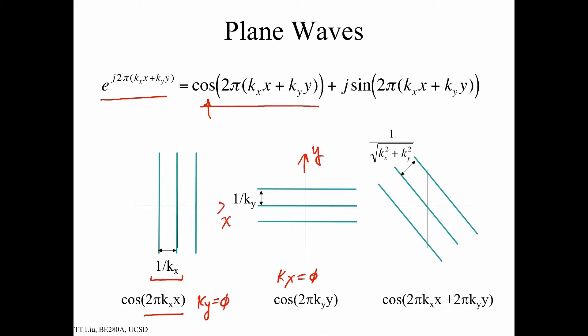Now in general, we will have both kx and ky, and so the cosine will show variation in a diagonal direction. And it turns out that the period of this is now 1 over square root of kx squared plus ky squared.